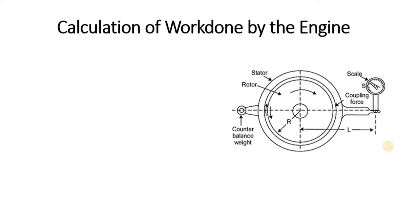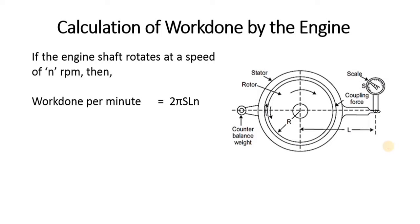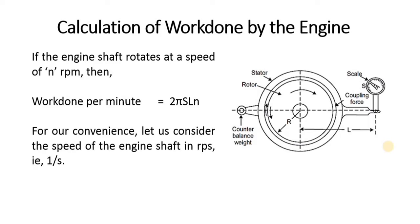Calculation of work done by the engine. If the engine shaft rotates at a speed of n RPM, then work done per minute becomes 2πSLn. For our convenience, let us consider the speed of the engine shaft in RPS, i.e. 1 over seconds.